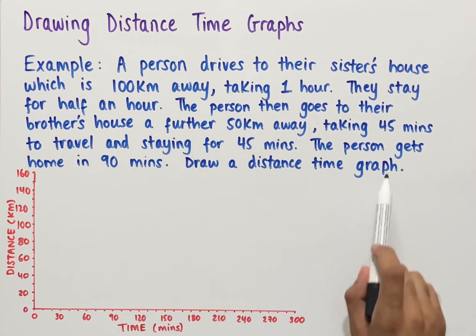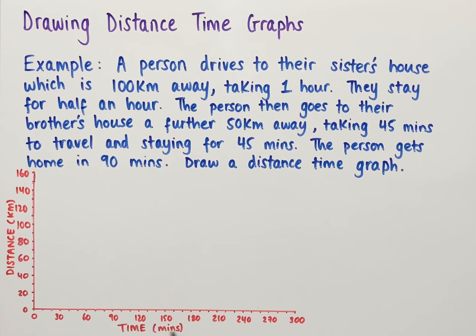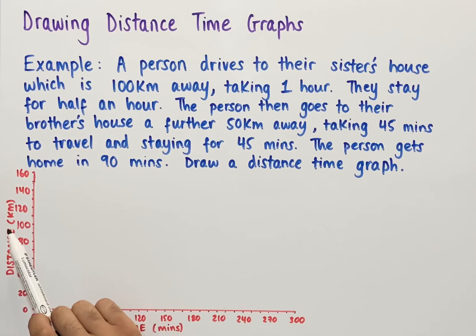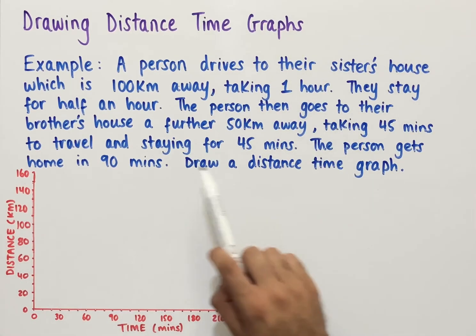Draw a distance time graph. We have axes here with distance labelled on the y-axis and time labelled on the x-axis. The units for distance are kilometers and the units for time are minutes. We're going to use this to draw our distance time graph for this example.